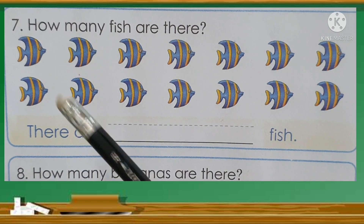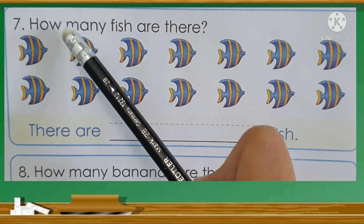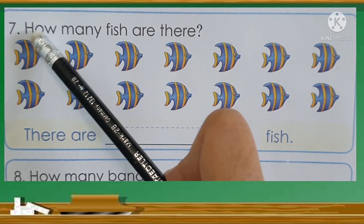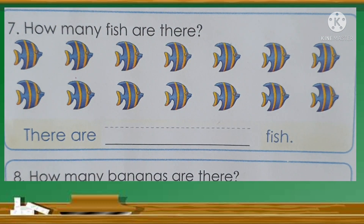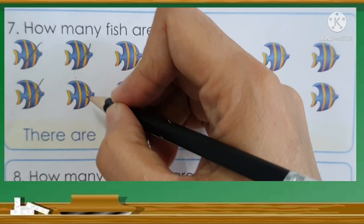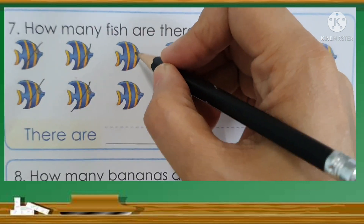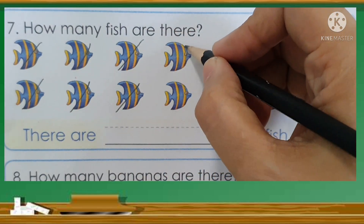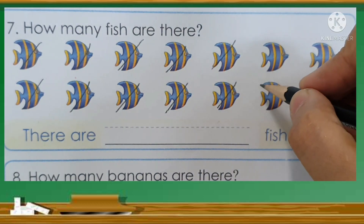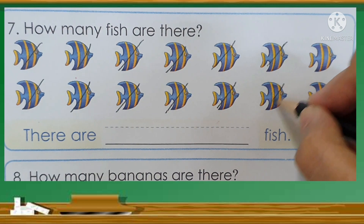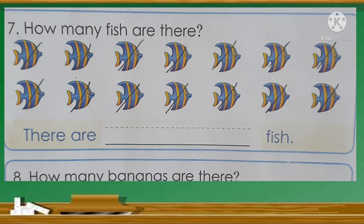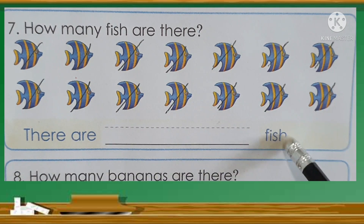Now let's go to number 7: How many fish are there? Now let's count how many fish. 1, 2, 3, 4, 5, 6, 7, 8, 9, 10, 11, 12, 13, 14. So there are 14 fish.